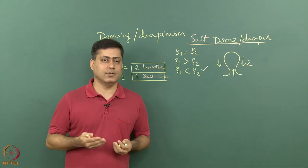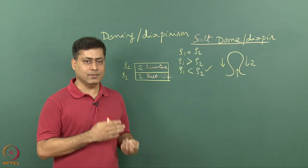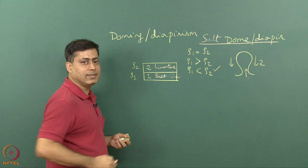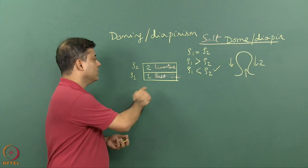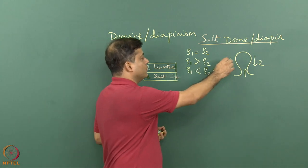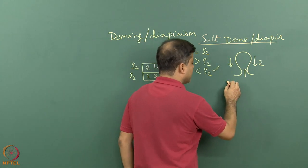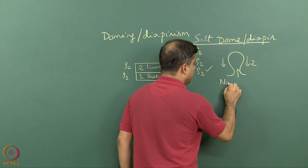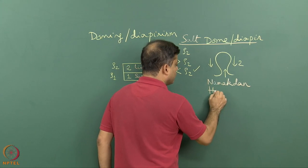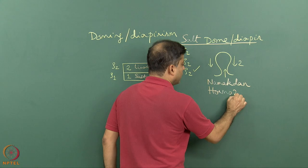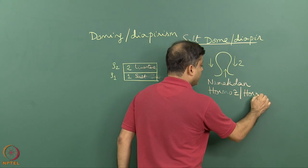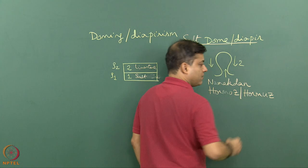When the start of Holocene, around 10,000 years back, this was the situation. Since the density of limestone is more than that of salt, salt started moving up in this manner giving rise to salt domes or diapirs. Two of the best examples are Namakdan and Hormoz (H-O-R-M-U-Z).